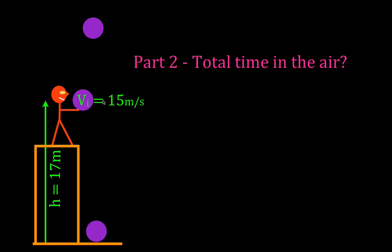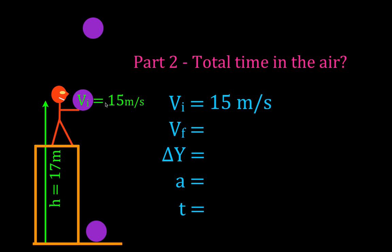As we have done in all of our kinematic problems, we like to write down all five of the variables contained within the kinematic equation: initial and final velocity, change in position, acceleration, and time. Then we fill in what we know. The initial velocity is 15 meters per second. The acceleration due to gravity is negative 9.81 meters per second squared — negative because the acceleration vector points downward. The change in position is minus 17 meters. Don't forget your negative signs.